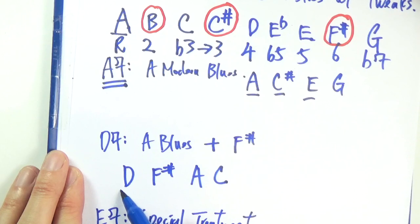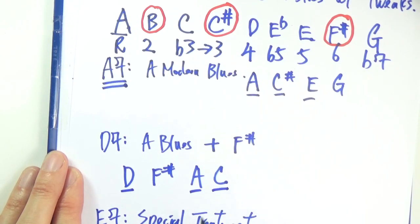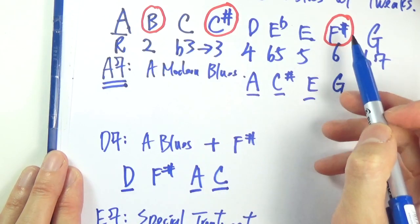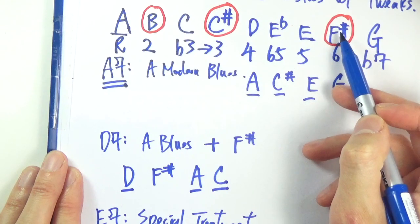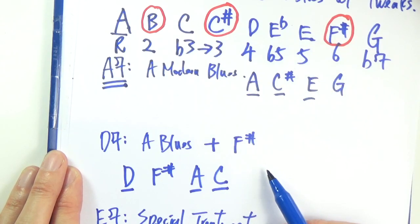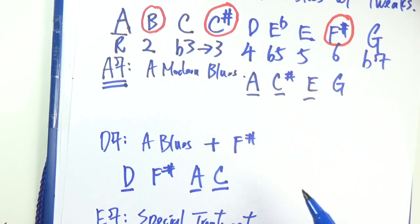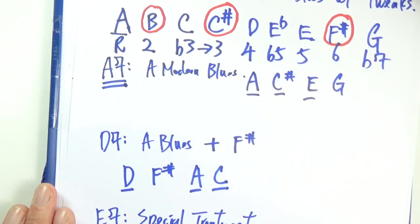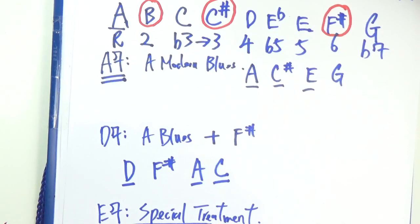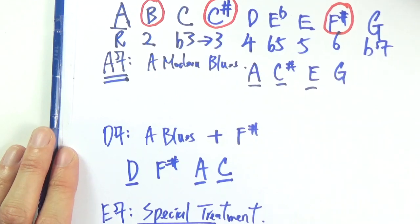From A blues scale, you would have these notes. Except for F sharp, which we also added in the A modern blues scale. In the note choice video over the 4 chord, we are going to talk about avoiding C sharp in this case. But for now, let's focus on A blues plus F sharp. And I'll be sure to cover the note choices over each particular chord in details later on.